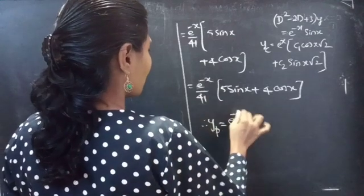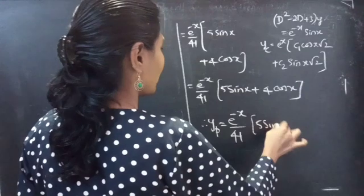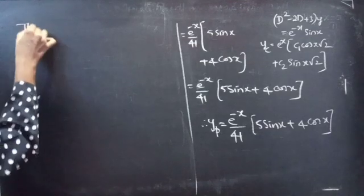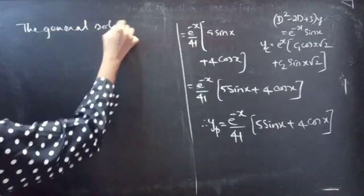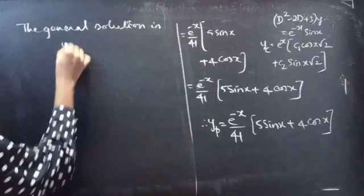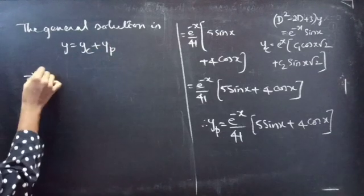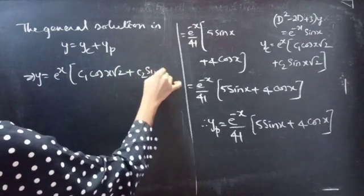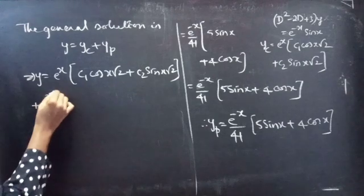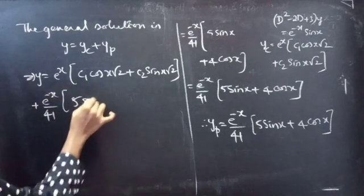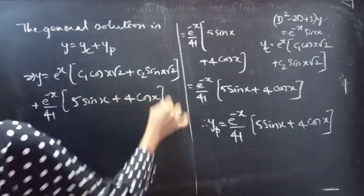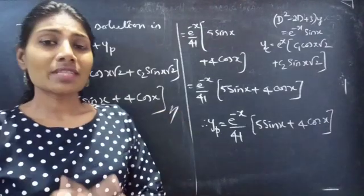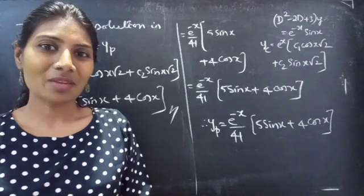This completes the problem. The general solution is y = yc + yp = e^x·(c1·cos(√2·x) + c2·sin(√2·x)) + (e^(-x)/41)·(5·sin(x) + 4·cos(x)). We have seen a problem from higher order linear differential equations in this video. Hope you understand. We will see you in the next video — bye bye.